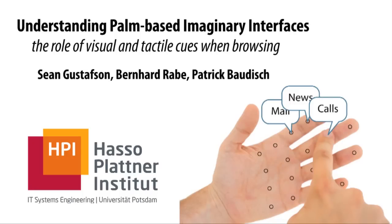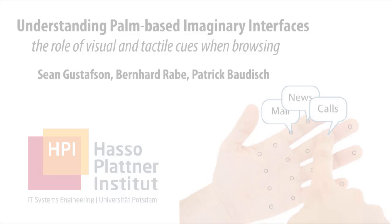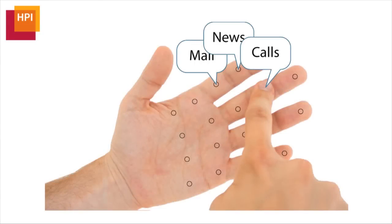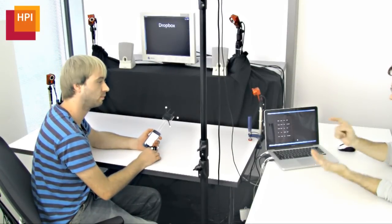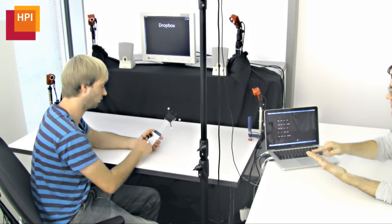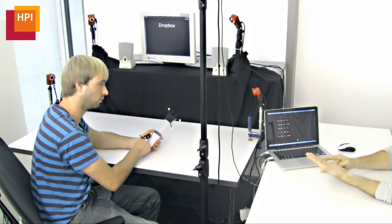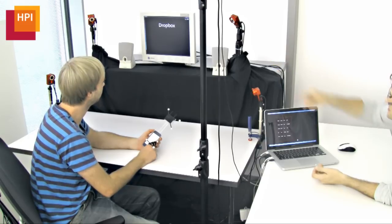In our paper, we sought to gain a deeper understanding of POM-based imaginary interfaces. To do this, we adapted an interface originally designed for visually impaired users to create a system that audibly announces target names as users move across them. We ran three user studies to evaluate the system and to determine how visual and tactile cues contribute to its performance.